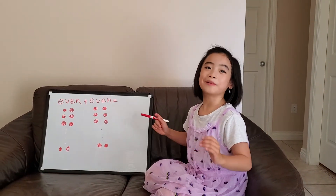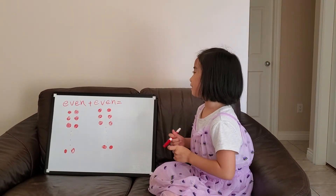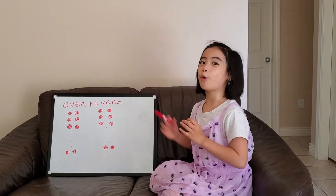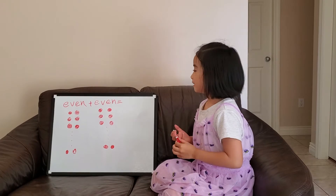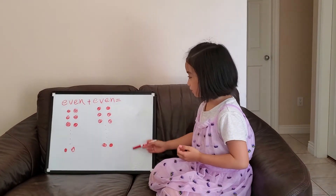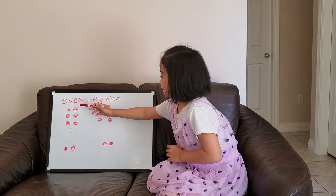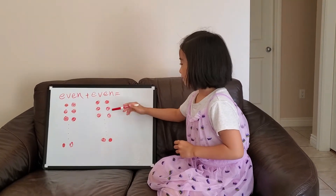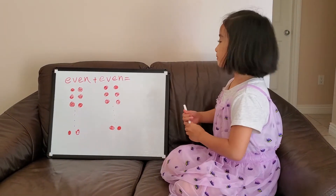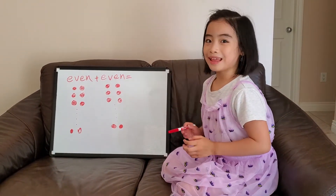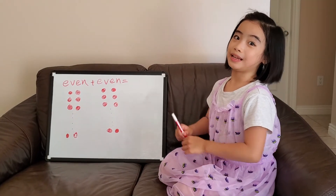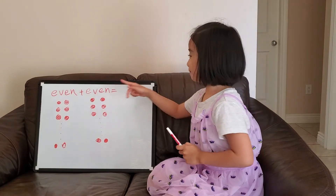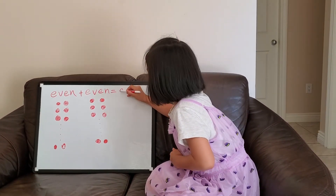So now we are going to look at the topic of what is even plus even — does it equal even or odd? We can look at the picture shown below. This even number can have pairs, and the other even number is the same thing. Together, if we add them, it's going to be a bigger number of pairs. So even plus even equals even.